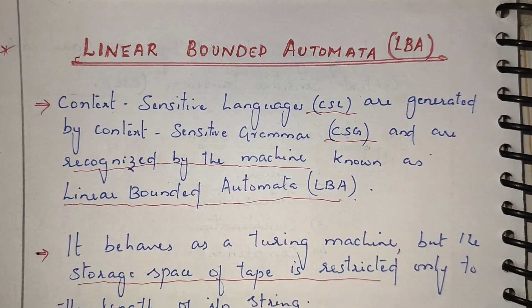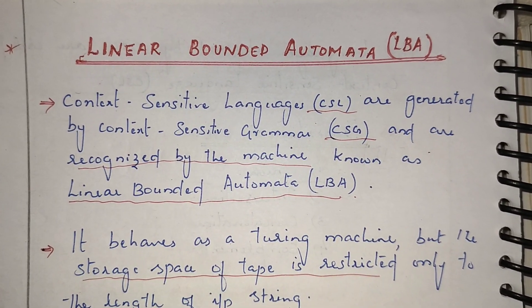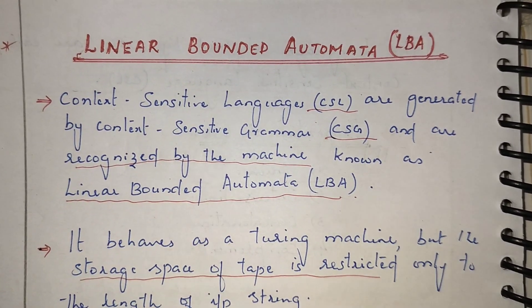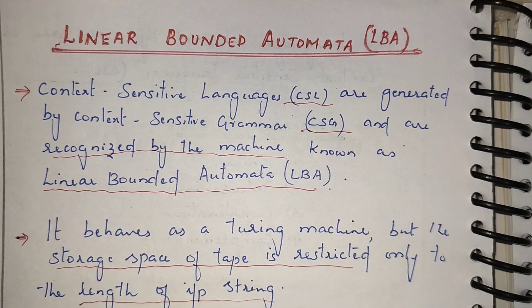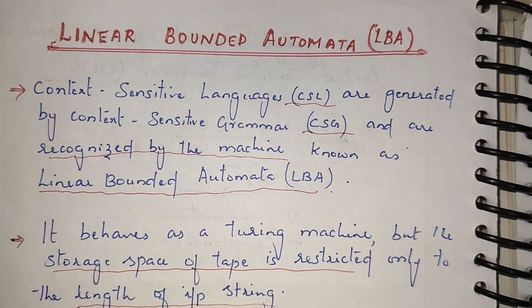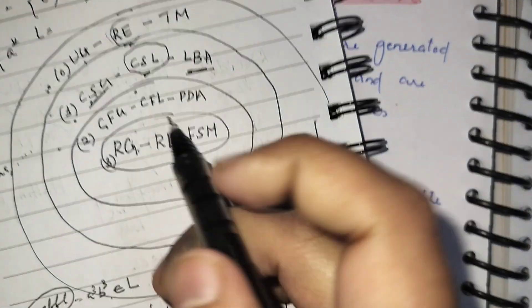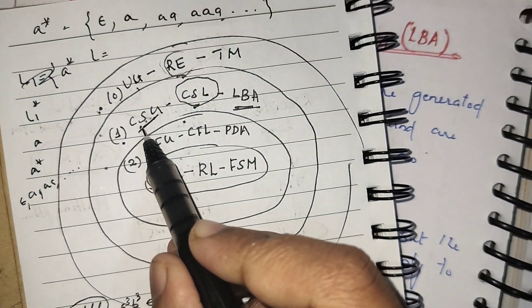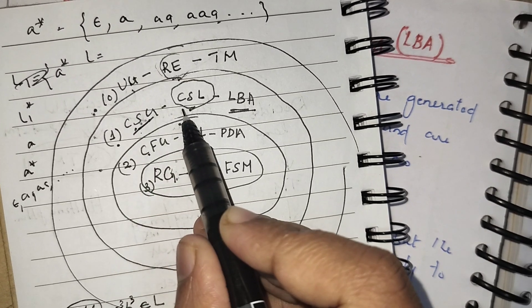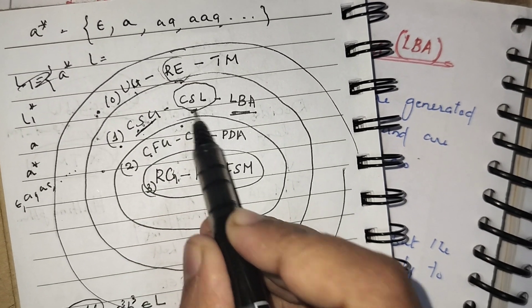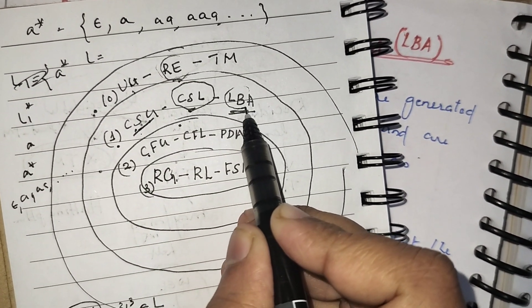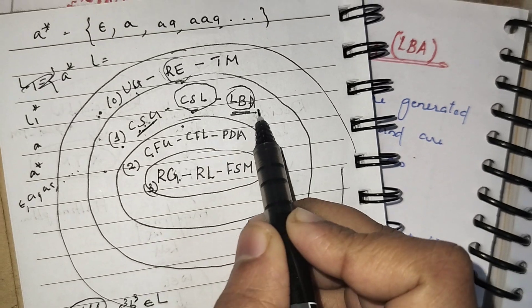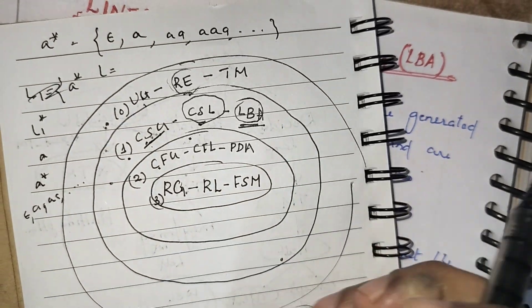Next is linear bounded automata. What is linear bounded automata? Context sensitive grammar generates context sensitive languages, and the machine which recognizes all the context sensitive languages is nothing but linear bounded automata.